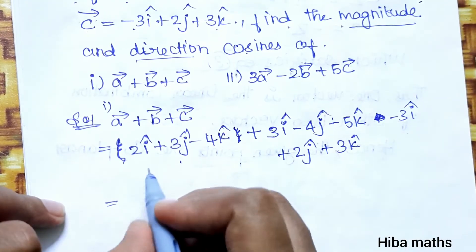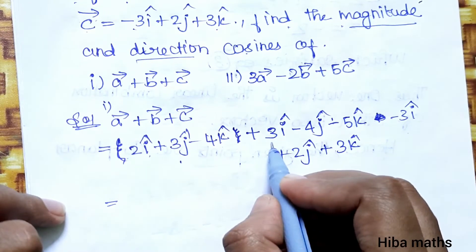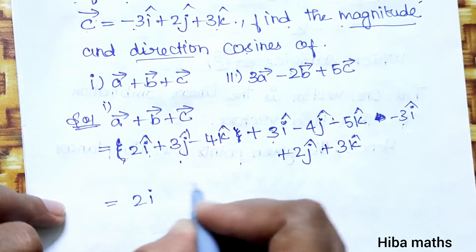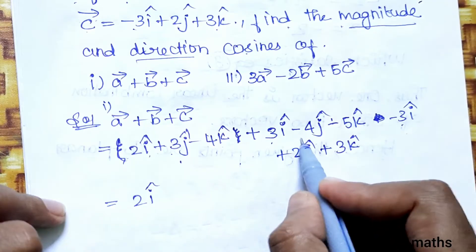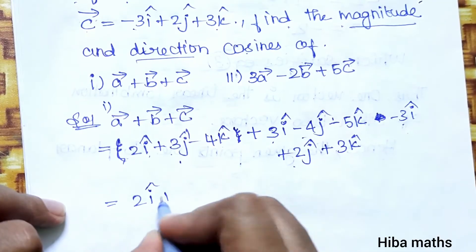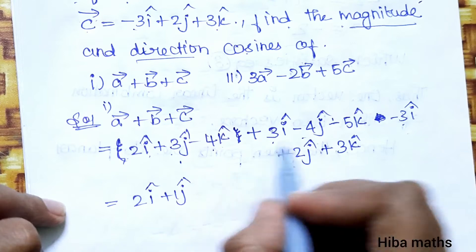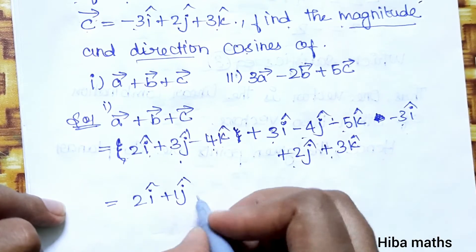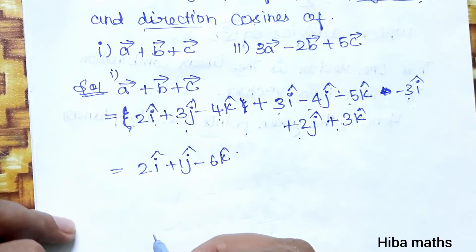Solving the i components: 2i + 3i = 5i, minus 3i gives 2i. For j: 3 − 4 = −1, plus 2 = 1, so +j. For k: −4 − 5 = −9, plus 3 = −6, so −6k.